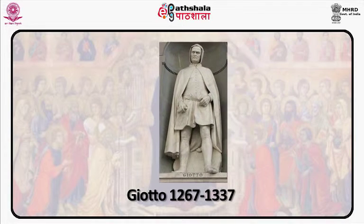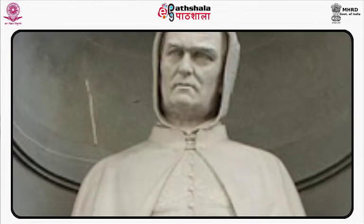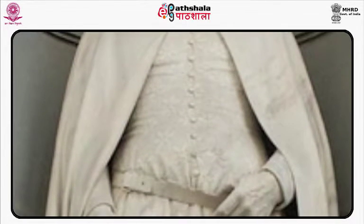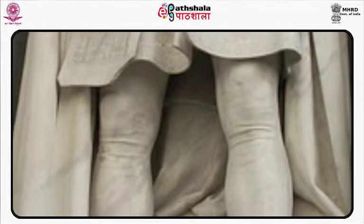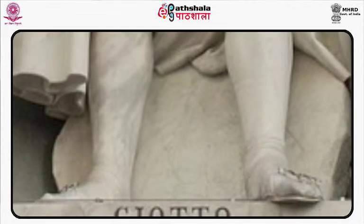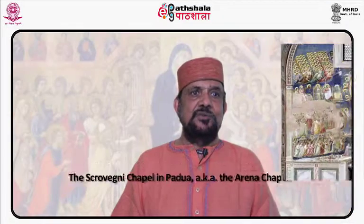Let us now look at Giotto, 1267 to 1337. He was an Italian painter and architect from Florence. In the late Middle Ages, he is generally considered the first in the line of great artists who contributed to the Italian Renaissance. Here we see the magnified life statue of Giotto outside the Uffizi. Giotto may very well have been the first painter succeeding in creating unified compositions. There is unity between the figures and their surroundings, and unity among the figures interacting as they do through gesture and emotion.